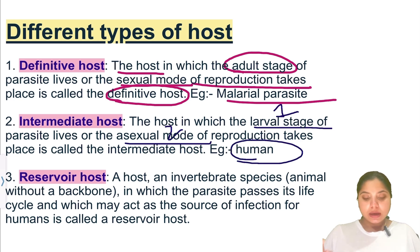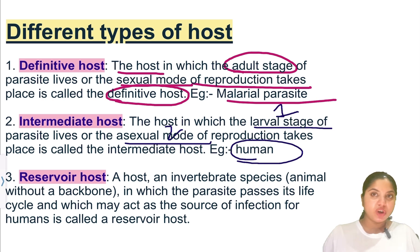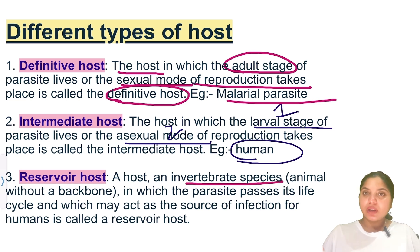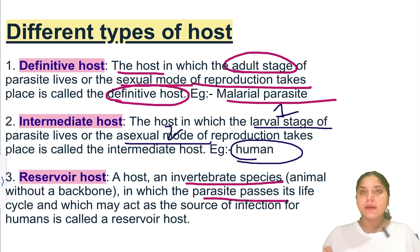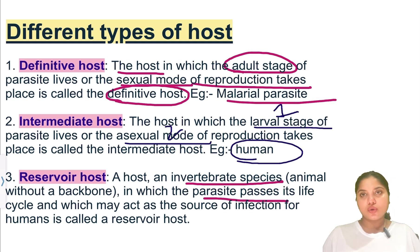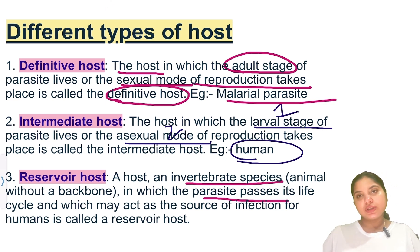The third is the reservoir host. A reservoir host is an invertebrate species — animals that do not have a backbone — in which the parasite passes its life cycle, and which may act as a source of infection for human beings. That type of host is called a reservoir host.